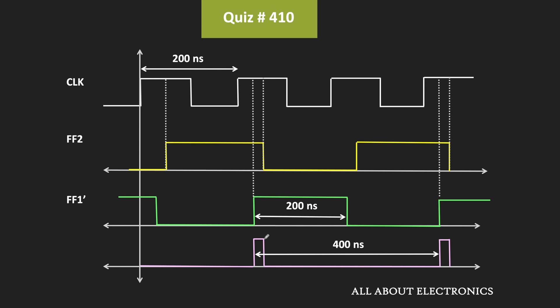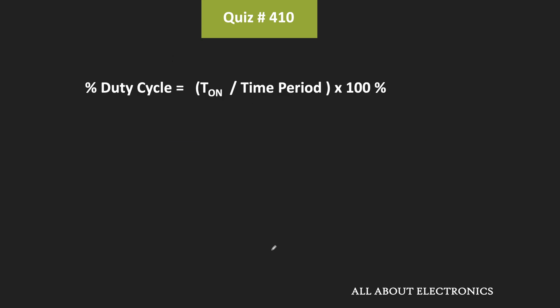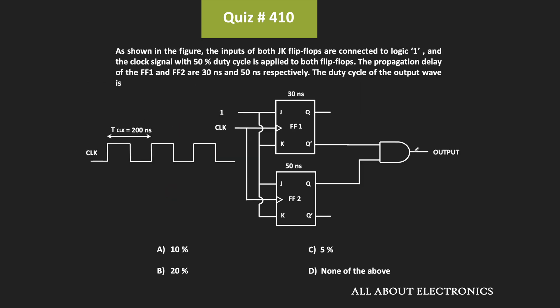The ON time of this output wave is equal to 20 ns. So the duty cycle is equal to the ON time divided by the time period. In percentage, it is given as ON time divided by time period times 100%. In this case, that is equal to 20 ns divided by 400 ns times 100%, which equals 5%. So for the given circuit, the duty cycle of this output wave is equal to 5%, and therefore option C is the correct answer.